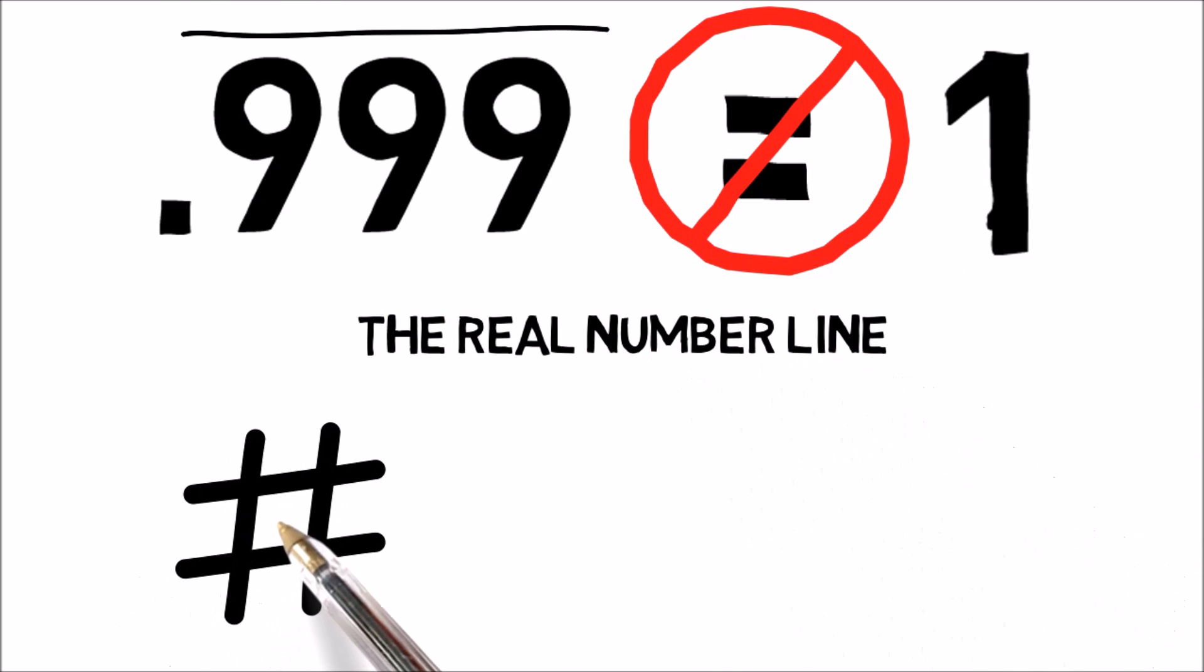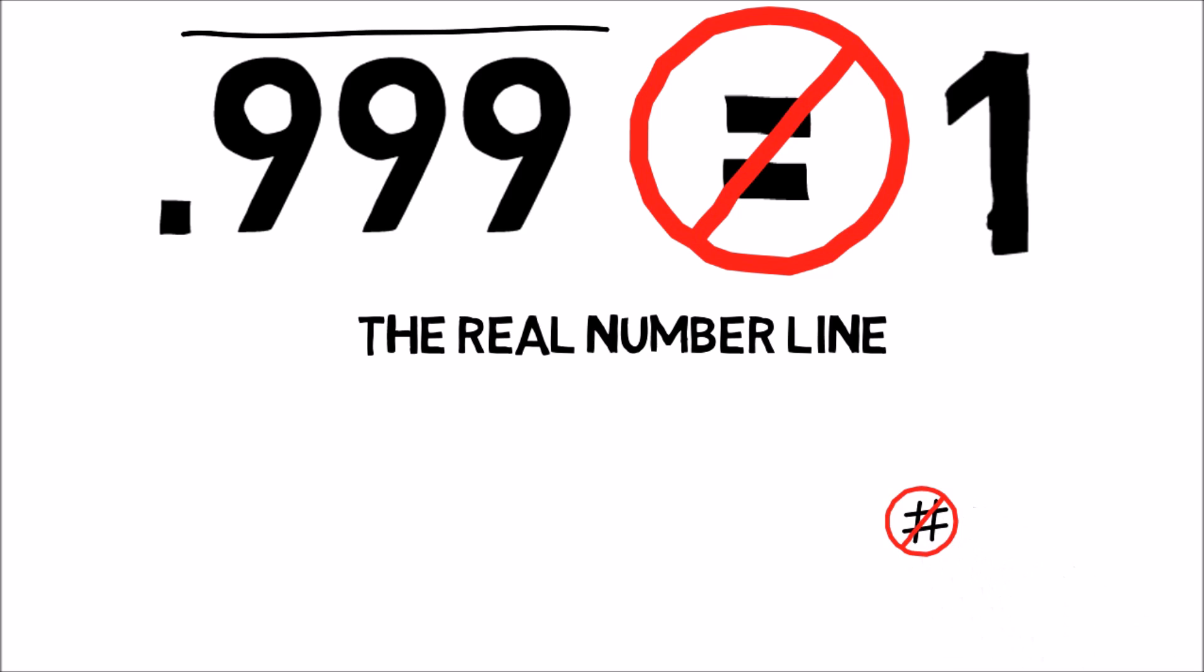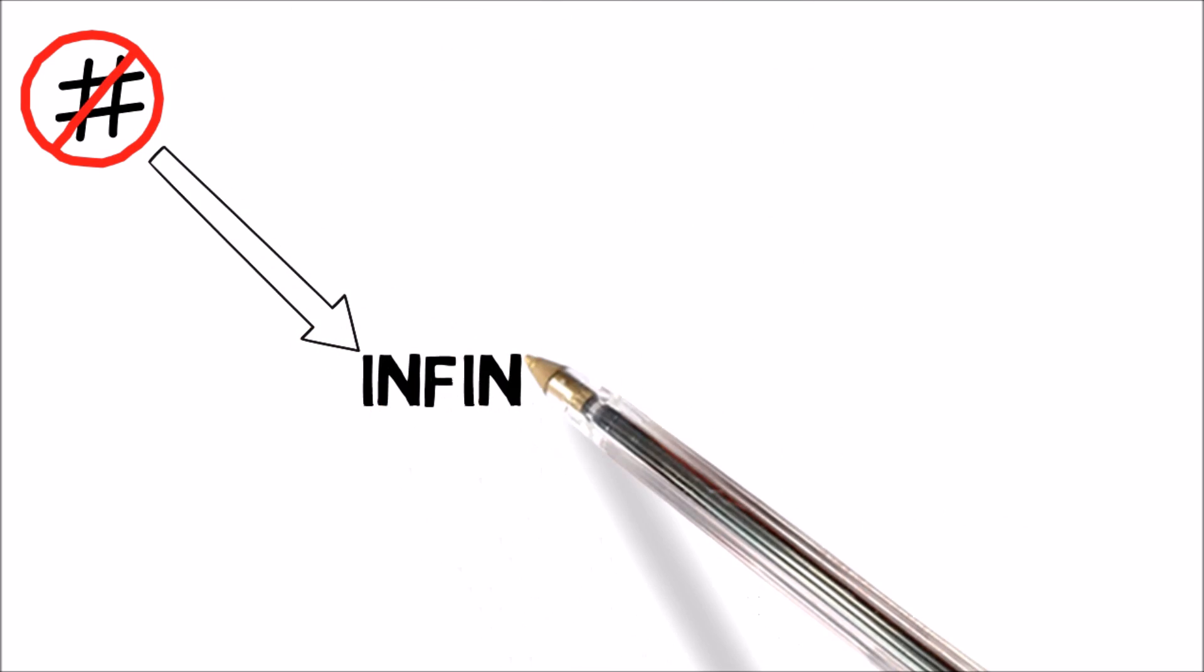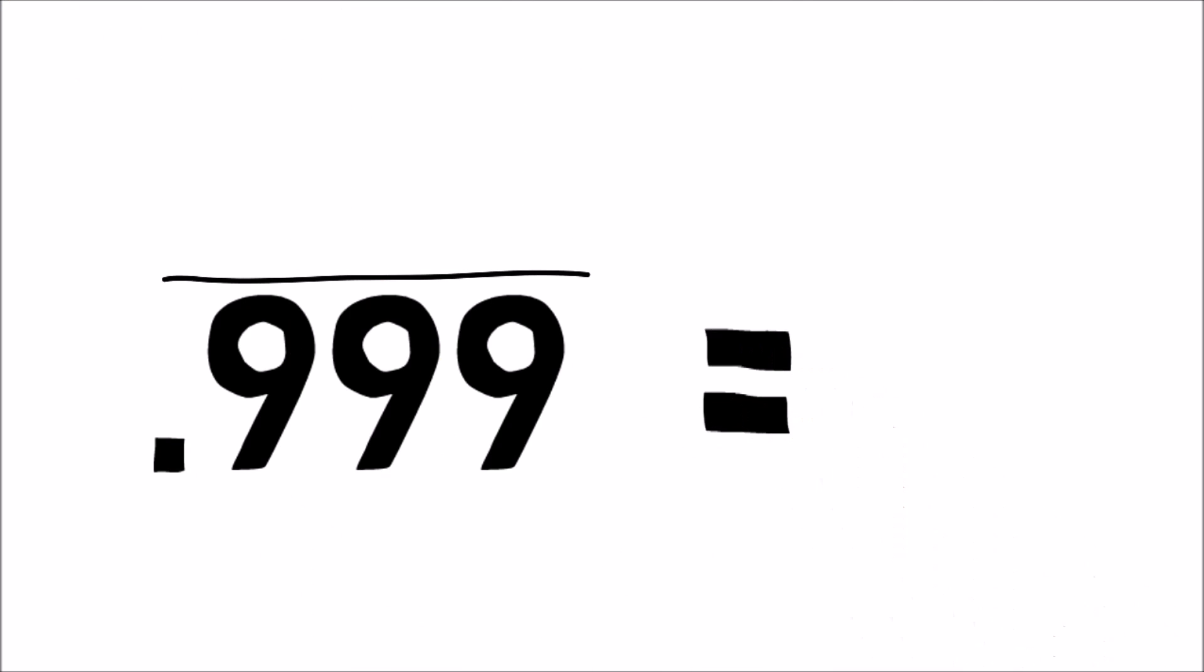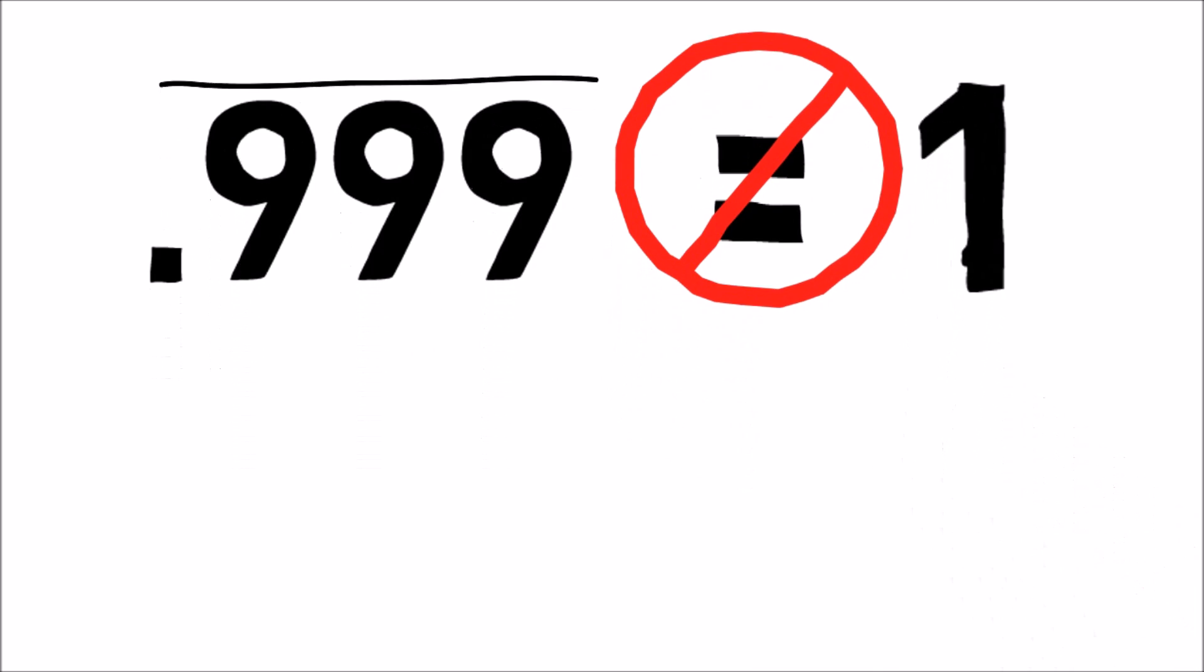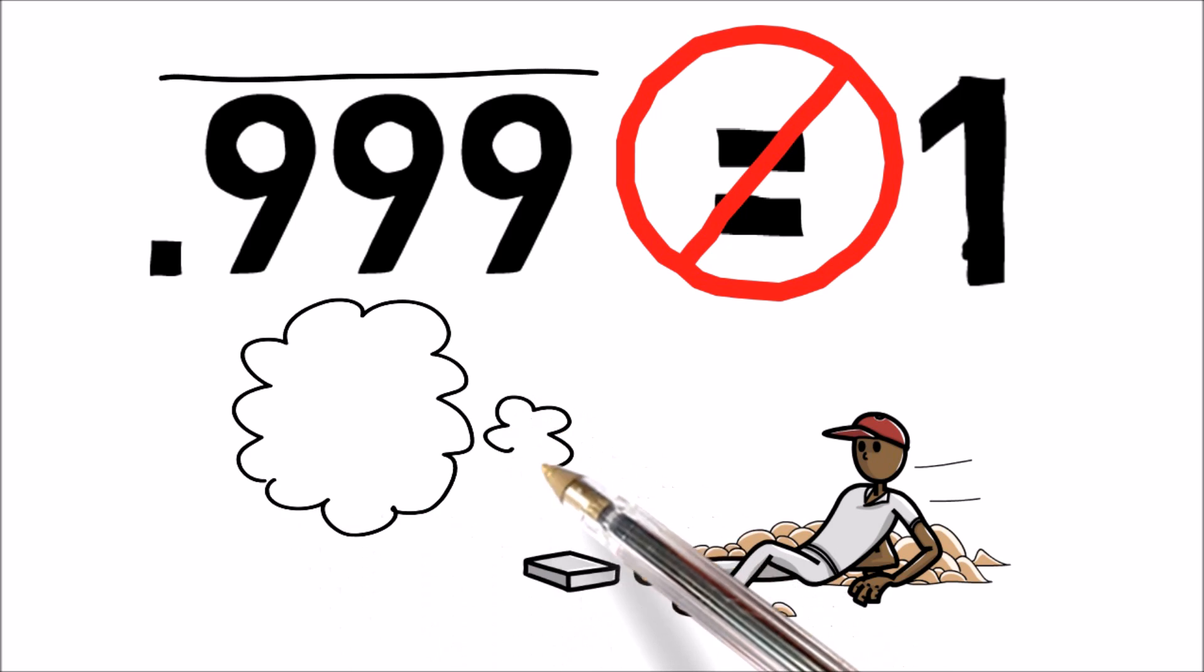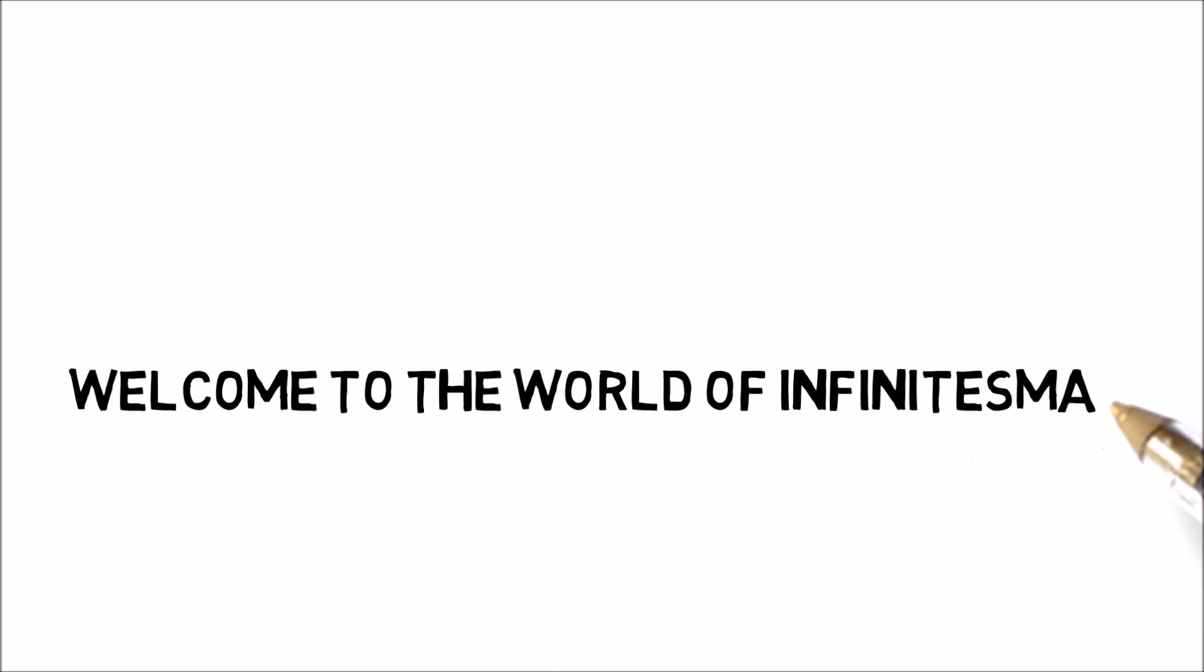The real number line doesn't have a number for this infinitely small change. But there is a number for this change, called an infinitesimal. By using this infinitesimal, you can distinguish the difference between those numbers. They are different, and are an infinitesimal apart. Common sense in math has been restored! Crazy, right? Welcome to the world of infinitesimals!